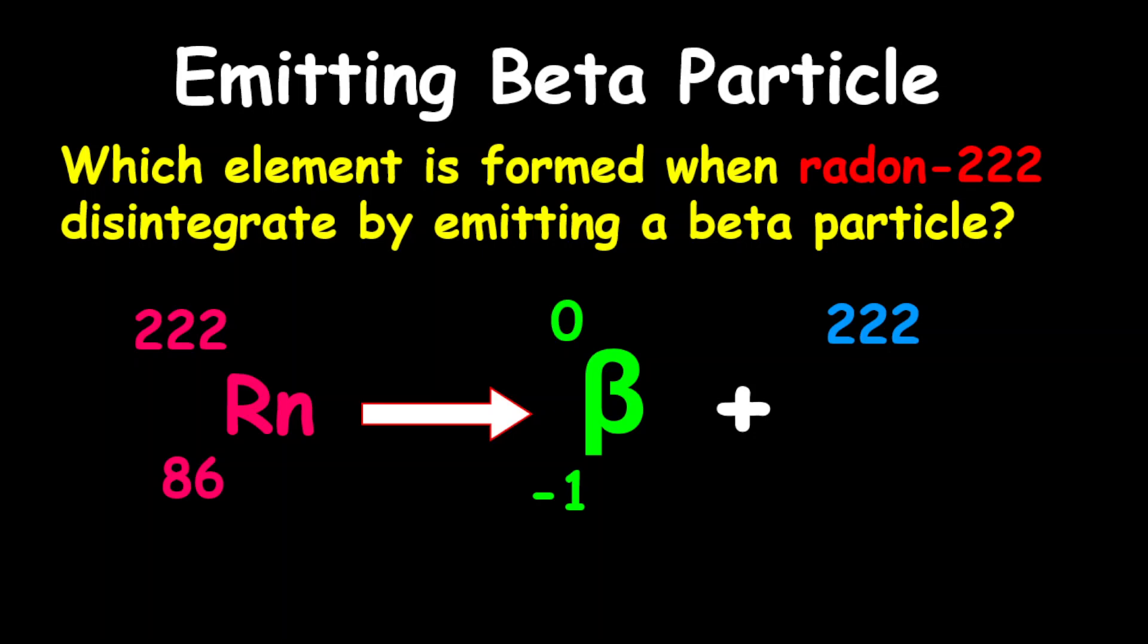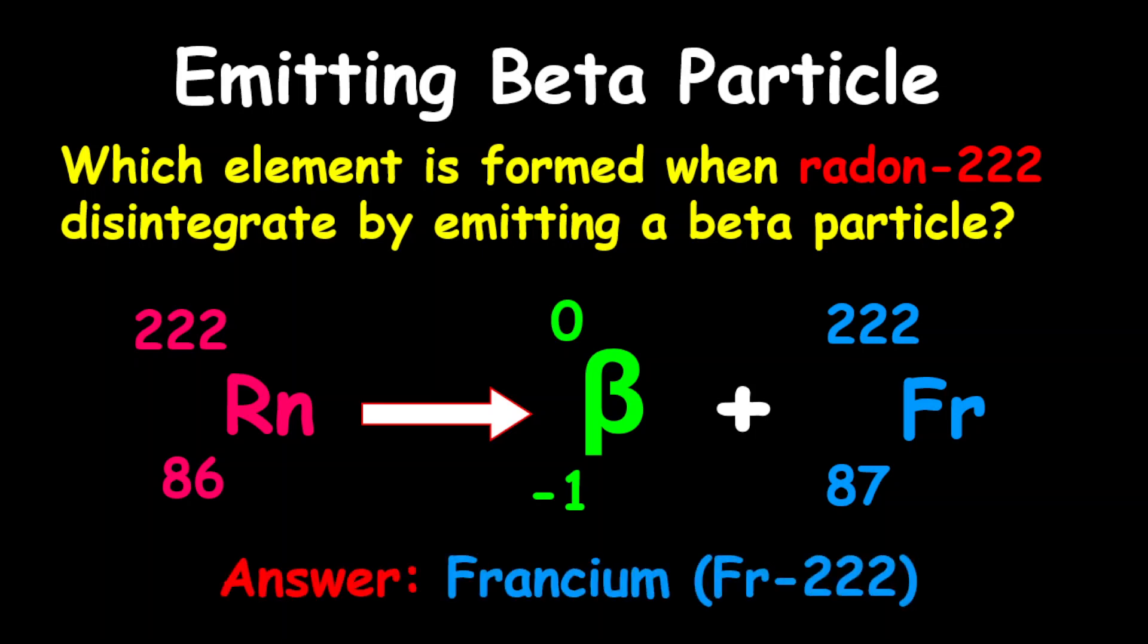Now, to determine the proton number, we're going to minus negative 1 from 86. So 86 minus negative 1 gives us 87. If you look through the periodic table, you realize that 87 is the proton number for francium. So our answer is francium-222.